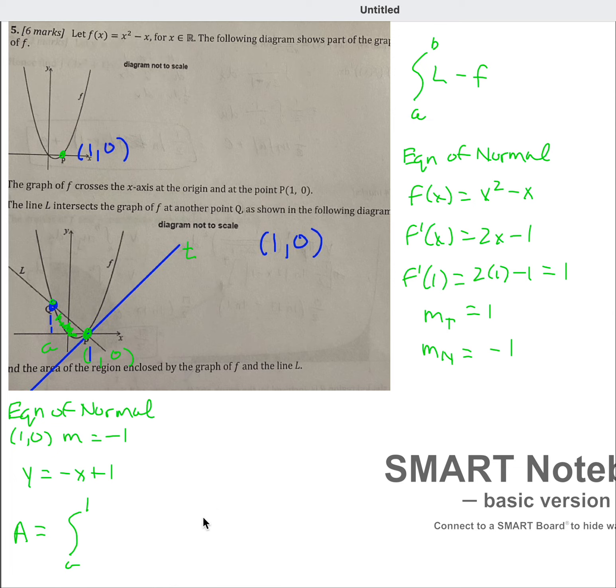And so we got this far. Let me go ahead and write in. It's going to be L minus f. So it's going to be negative x plus 1, that's the normal line, minus the function f, which is x squared minus x. And of course that's dx. Again, we just have to find the value of a.